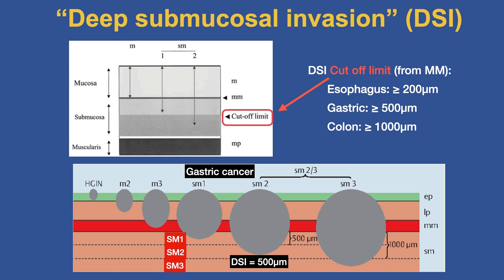For the esophagus, as a rule, the DSI is 200 microns. In the stomach, it's 500 microns. In the colon, it's 1,000 microns. As a general rule, the DSI correlates with the transition of SM1 to SM2 — so as long as the cancer is limited to SM1, there's a high probability of endoscopic cure.